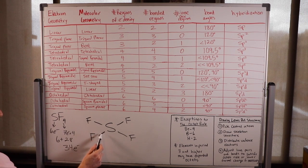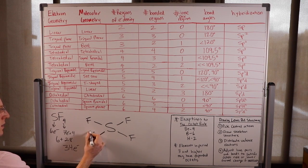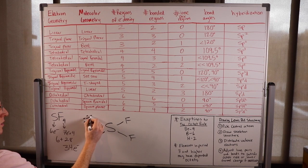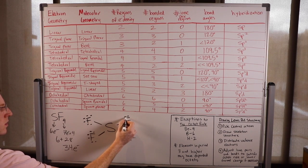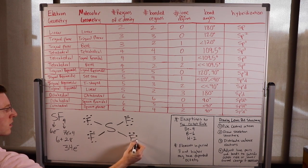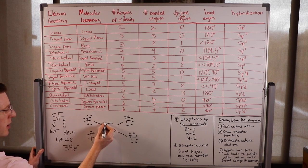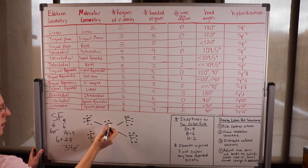I've already used up 8 electrons for four bonds, so I have 26 left. I'll start filling up the octets of the outer atoms — they all need six. That uses 24 electrons for the lone pairs, so I actually have two left, and the only place to put those is on the central atom, the sulfur.